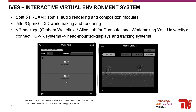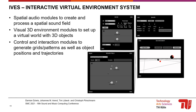IFES uses SPAT5 for spatial audio rendering and composition, Jitter with OpenGL for 3D worldmaking and rendering, and the VR package for interfacing with PC VR systems including head-mounted displays and tracking systems. As a result, the toolkit offers modules for different purposes: spatial audio modules for creating and processing a spatial sound field, modules for building and rendering virtual worlds and 3D objects, and modules for controlling and interacting with object positions, trajectories, grids and patterns.